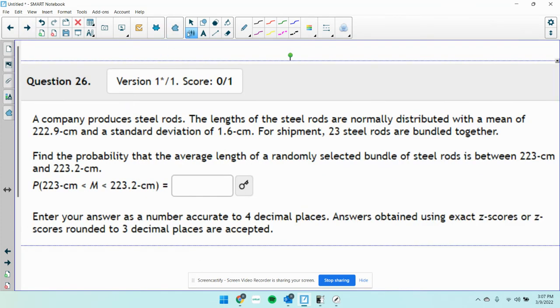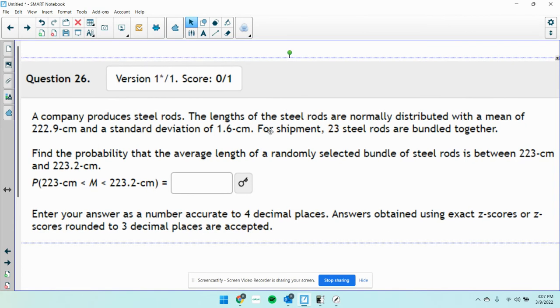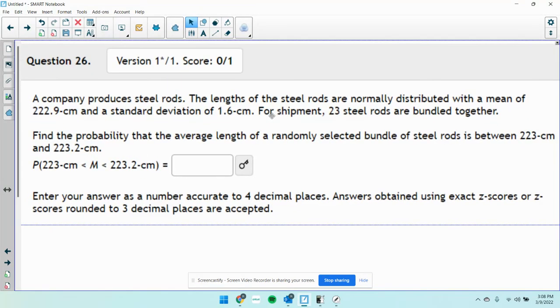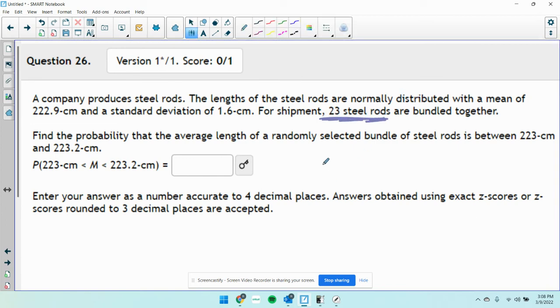This says a company produces steel rods. The lengths of the steel rods are normally distributed. 23 steel rods, that's a sample. So our σ is going to be σ of x̄, which is equal to the standard deviation of the population divided by the square root of the sample size. So that's the same thing we're doing here.